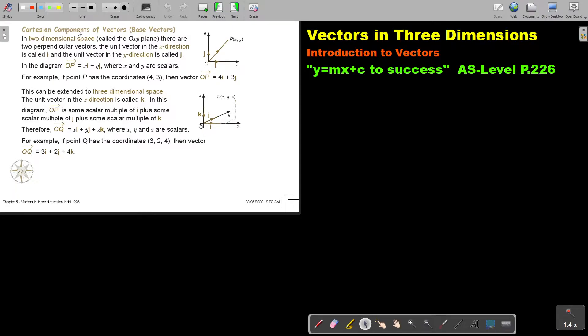Cartesian components of vectors, base vectors. In two-dimensional space, called the OXY plane, there are two perpendicular vectors. The unit vector in the X direction is called I and the unit vector in the Y direction is called J.